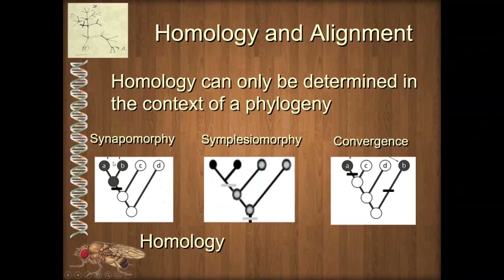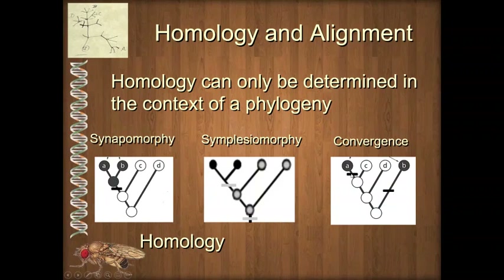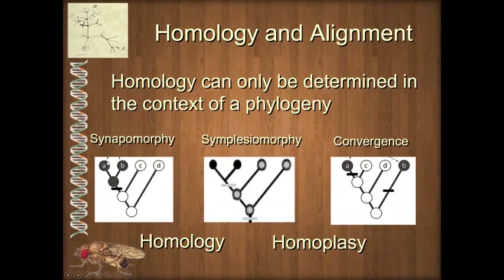So we've defined synapomorphies — evolved once, all descendants have them. We've defined simplesiomorphy — evolves once in an ancestor and then is lost in some descendants. And we talked about convergence — a character that evolves independently twice. Both a gain and a loss, or two independent gains of a characteristic, are homoplasy — a more complex explanation rather than gained once and everyone still has it. Review those terms; make sure you can identify, recognize, and diagram these different evolutionary patterns on a phylogeny.